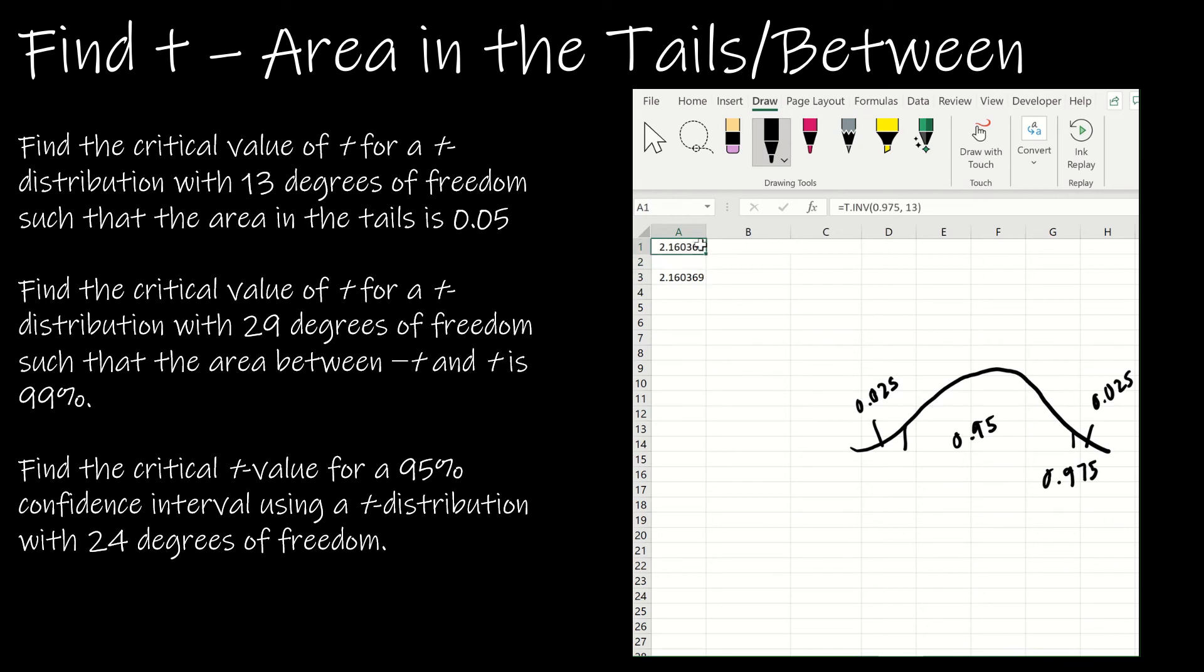Either one is perfectly acceptable: t inverse of the confidence level plus half of alpha, or t inverse 2 tail of the alpha, the part in the tails.